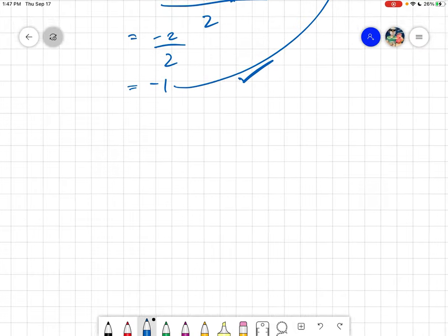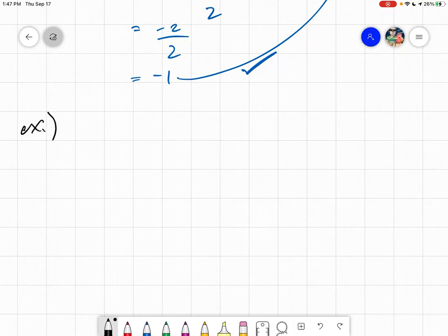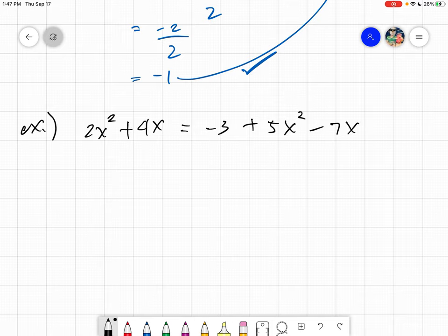Let's proceed to the next example. Say your given is like this: 2x squared plus 4x equals negative 3 plus 5x squared minus 7x. You will notice it's hard to identify what is a, what is b, and what is c, because they're not all together. What you need to do is simplify the equation, and you must be reminded of similar terms. Similar terms are terms with the same variable and exponent.